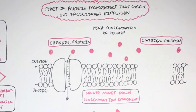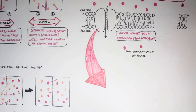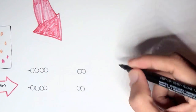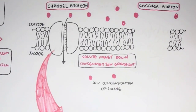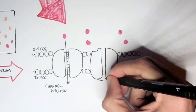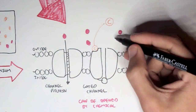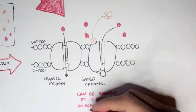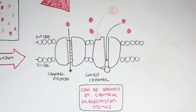The channel protein allows movement of a particular solute from an area of high concentration to an area of lower concentration. There are different types: a simple channel protein allows a solute to move straight through. However, there is also a gated channel protein, which can be opened by a chemical stimulus — when the chemical binds, it allows the solute to move through — or by an electrical stimulus, such as a difference in charge across the membrane, which opens the gated ion channel.